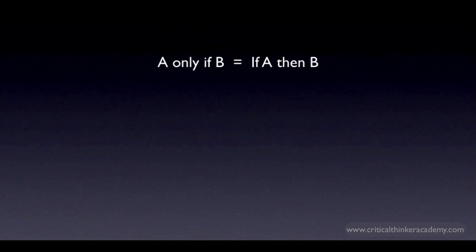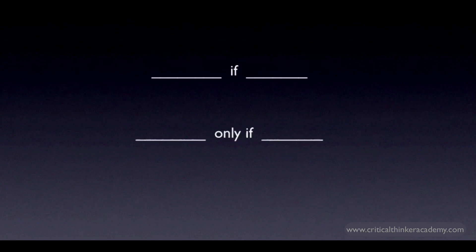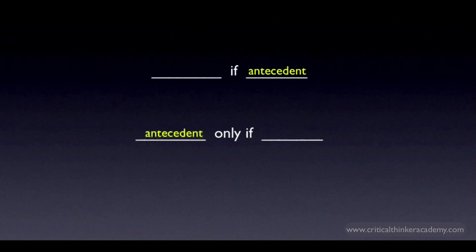Let's compare the if and only if rules. When you're given a conditional that uses if or only if, you look for the if. If the if is all by itself, then the antecedent is what immediately follows the if. If the if is preceded by only, then you do the opposite — what follows the only if is the consequent, and what precedes the only if is the antecedent.